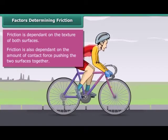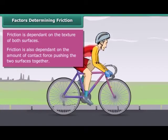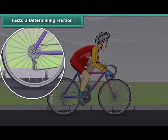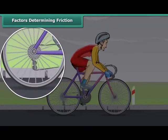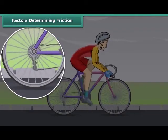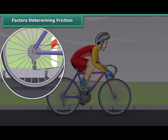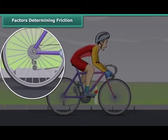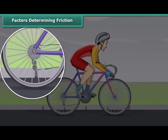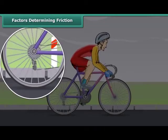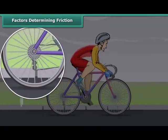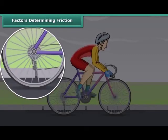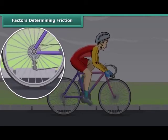While in motion, the tires of the bicycle are rubbing against the surface of the road. When two surfaces rub on one another, a force comes into play. This force acts in the direction opposite to the direction of motion, thus slowing down the motion and finally bringing the moving object to a stop.